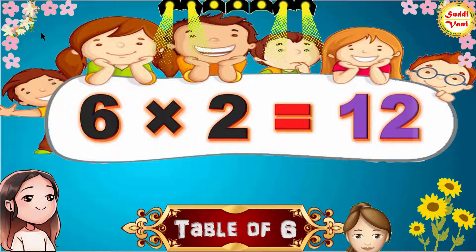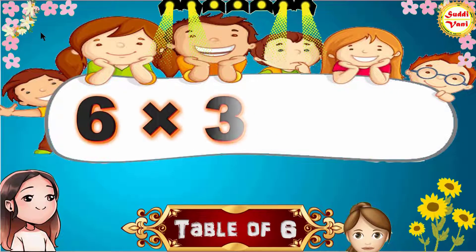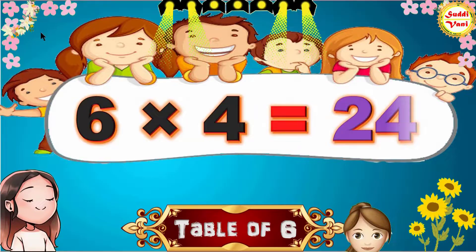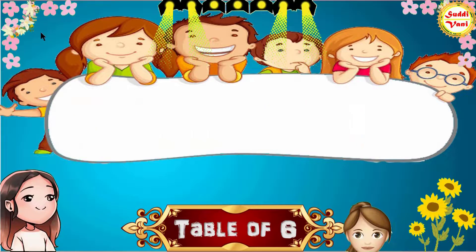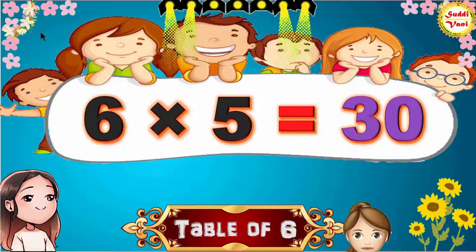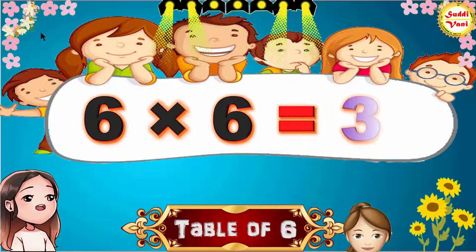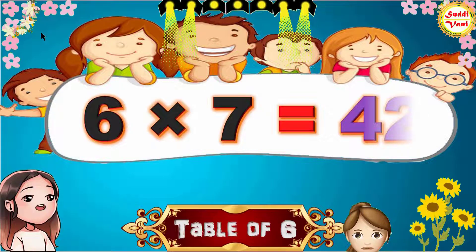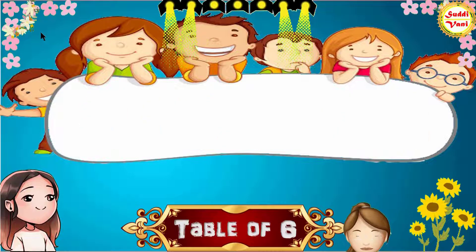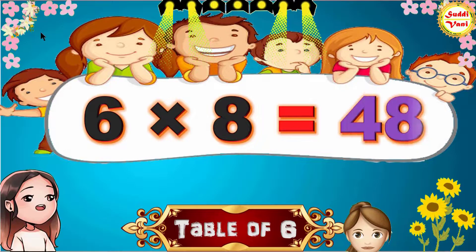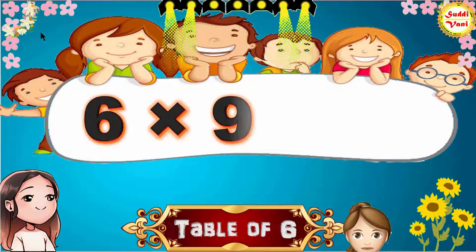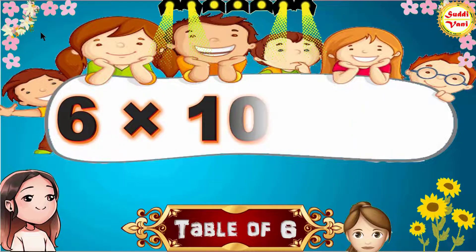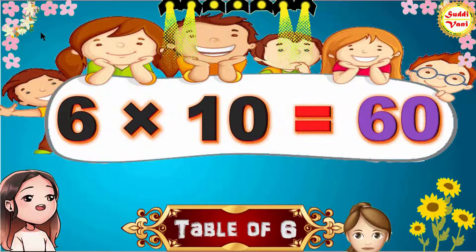6 2s are 12, 6 3s are 18, 6 4s are 24, 6 5s are 30, 6 6s are 36, 6 7s are 42, 6 8s are 48, 6 9s are 54, 6 10s are 60.